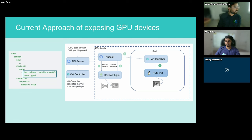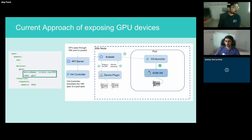We achieve these use cases using the device plugin framework in Kubernetes. For each GPU type in our use case, we have created a separate device plugin so that we advertise one pass-through GPU, two 2-to-1 vGPUs, and four 4-to-1 vGPUs. We have a separate plugin that manages each of these devices individually.